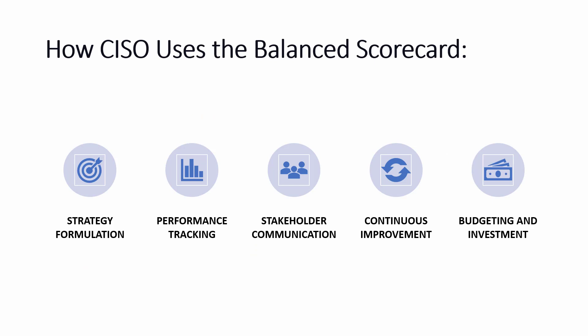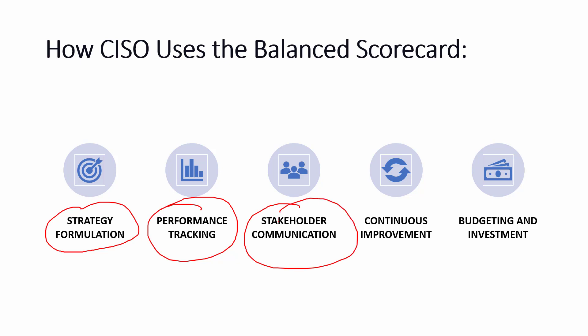The question is how the CISO can use the Balanced Scorecard. A CISO can use it from the point of view of strategy formulation — to formulate a robust information security strategy aligned with business goals. Second, the scorecard allows the CISO to track the performance of various security initiatives, ensuring they're delivering desired outcomes. Third, it gives better visibility in terms of stakeholder communication — providing a structured way for the CISO to communicate to stakeholders, including the board, about the status and effectiveness of the security program. It is also helpful in continuous improvement by regularly updating and reviewing the scorecard. Last, it can be used for budgeting and investments, informing decisions about where to invest resources for maximum impact.